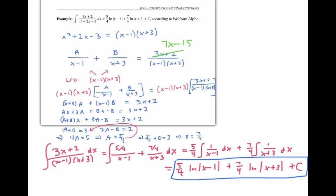Even if our numerator had just been a number like six, we still could have used the same method. We could have thought of this as zero x plus six, and we could have used the same equations down here, where a plus b would have to equal zero and three a minus b would have to equal six. So we'd still have two equations and two unknowns to solve for.